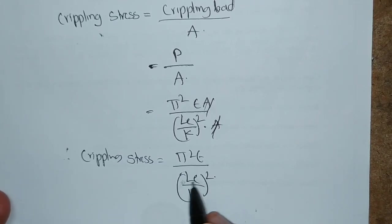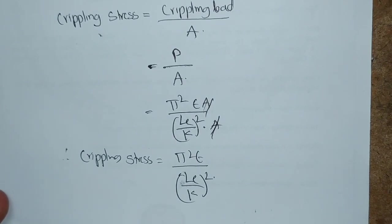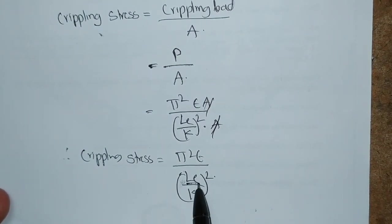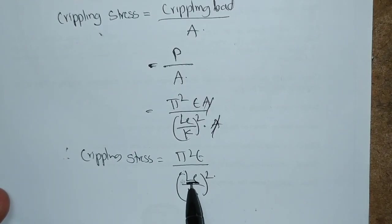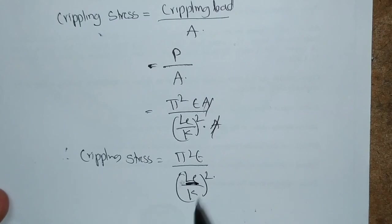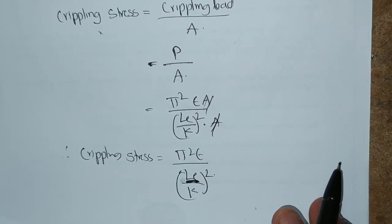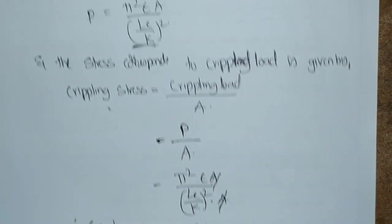Here we can substitute the value of LE depending upon the end conditions. Previously we made a tabular column of effective lengths - there we have the relation between effective length and actual length. By substituting those values, we can get the required crippling stresses for each and every section. Now we will see some example problems.